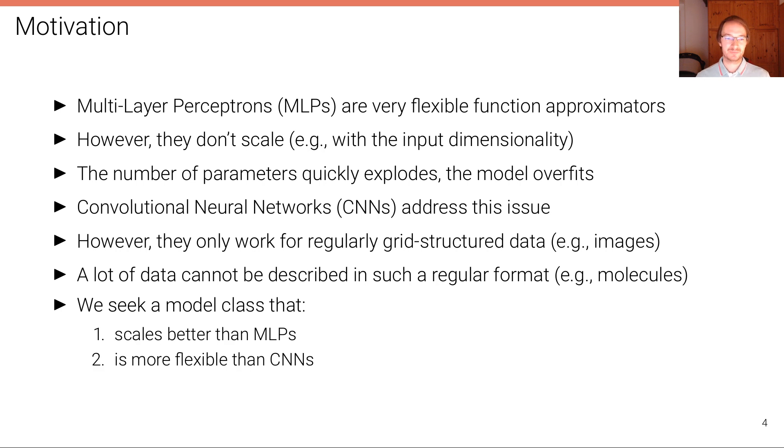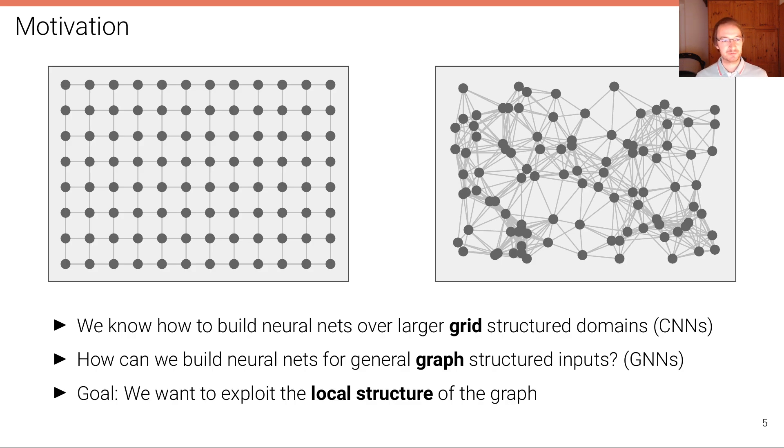So what we try to do in this lecture is seek a model class that scales better than an MLP but at the same time is more flexible than a convolutional neural network. We want something in between. We want to generalize convolutional neural networks to be more flexible but at the same time also works for large data sets or high-dimensional data. Here is another illustration of the same argument. We know that we can process data as we see here on the left with a convolutional network very well because this is grid-structured data, and assuming that we have a filter and translation equivariance, we can with relatively few parameters process such type of data.